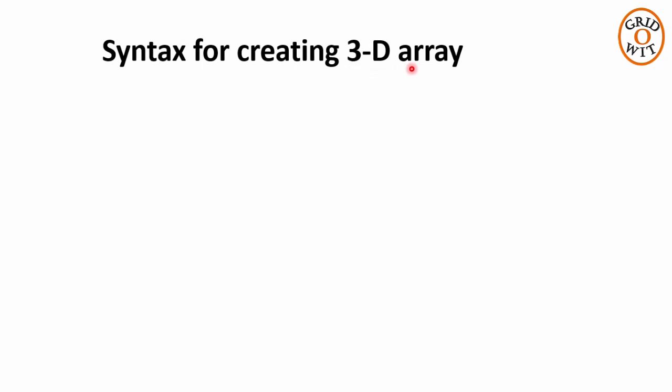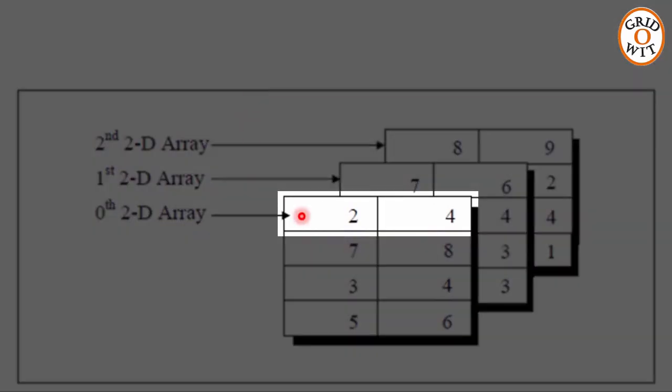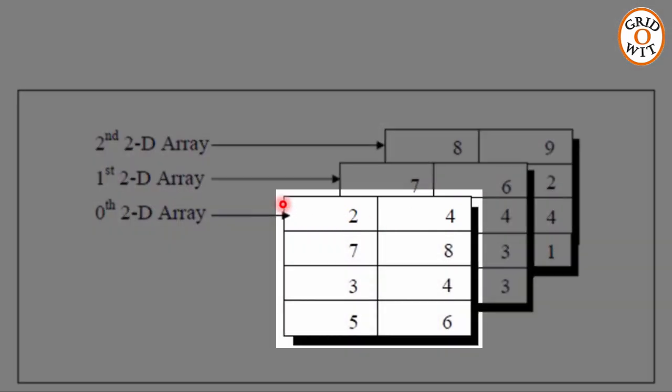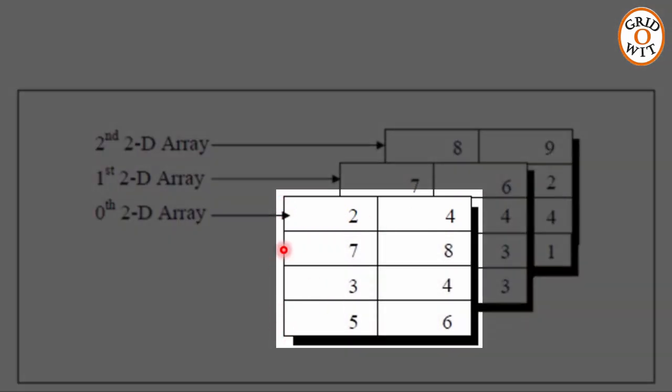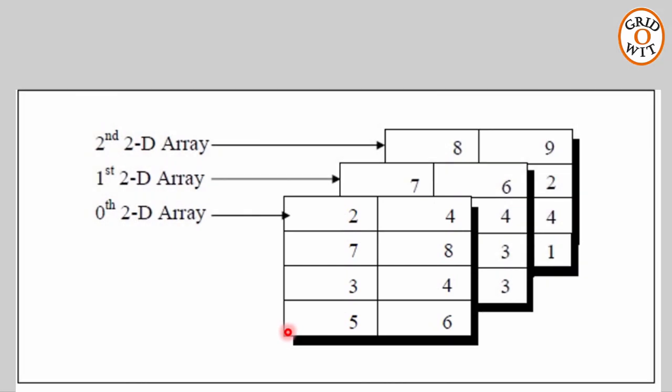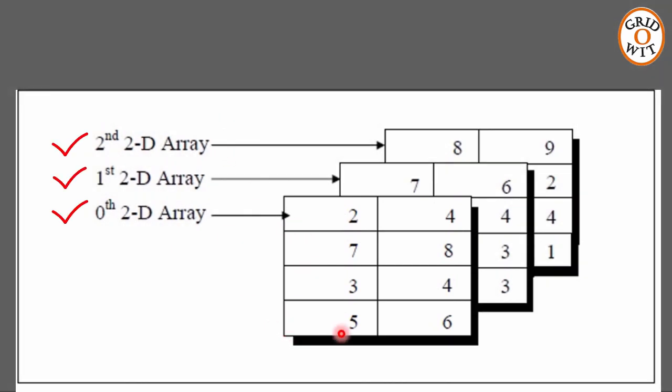Now let us see what is 3D array. When we will require 3 dimensional array and what is its syntax? In 1 dimensional array, we have only 1 row, different columns but only 1 row. In 2 dimensional array, we have rows and columns. Or we can say 2 dimensional array is a collection of 1 dimensional arrays. Similarly, 3 dimensional array is a collection of 2 dimensional arrays.